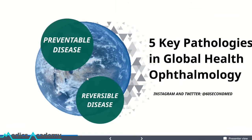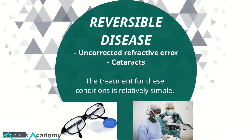In reversible disease, there's uncorrected refractive error and cataracts. Strikingly, uncorrected refractive error is simply treated through glasses and contact lenses. Cataracts do of course need cataract surgery; however, this is a surgical procedure that is known to be relatively simple for a trained ophthalmologist to carry out, and it's cost effective and time efficient.